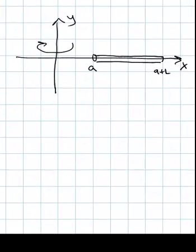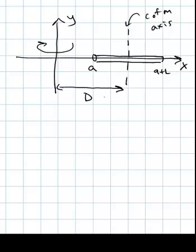Okay, so I've drawn my picture for the third example. We've got our rod located between x equals a and x equals a plus L. And it's rotating about the y-axis. So our center of mass, that's the center of mass axis. And our y-axis is the new axis of rotation. So this distance here is d, the distance between the axis through the center of mass and the axis we're interested in.